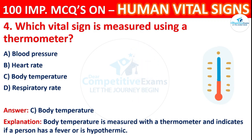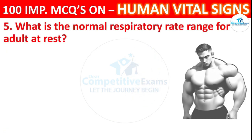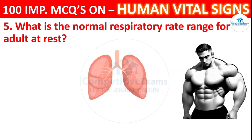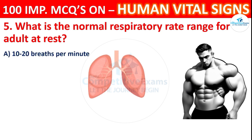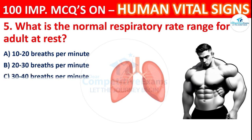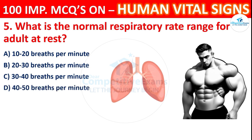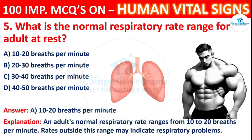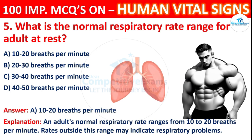Question 5: What is the normal respiratory range for an adult at rest? Options: 10 to 20 breaths per minute, 20 to 30 breaths per minute, 30 to 40 breaths per minute, or 40 to 50 breaths per minute. The correct answer is A, 10 to 20 breaths per minute. An adult's normal respiratory rate ranges from 10 to 20 breaths per minute. Rates outside this range may indicate respiratory problems.